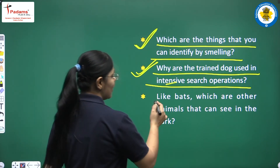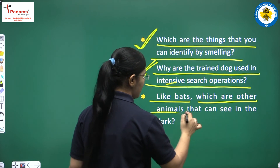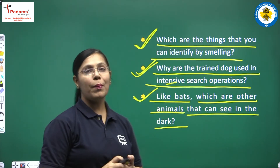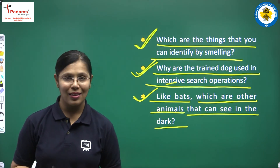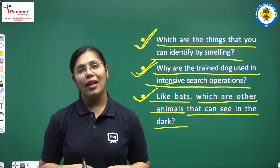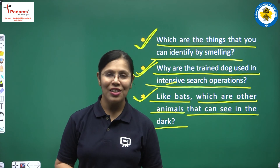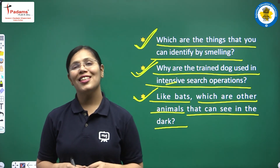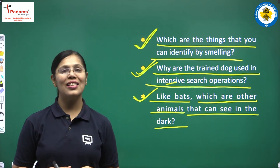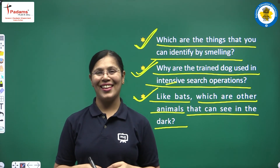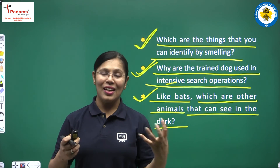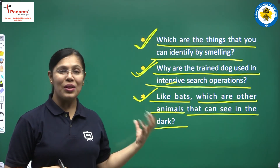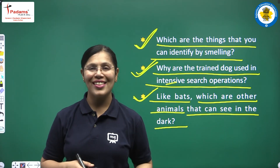The third question is: like bats, which are the other animals that can see in the dark? We have seen that bats can easily fly in the dark — so which other animals can see in the dark? Try to discuss these things with your elders.